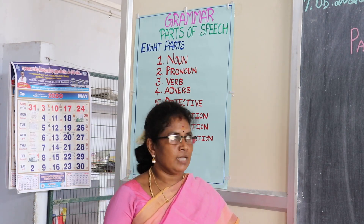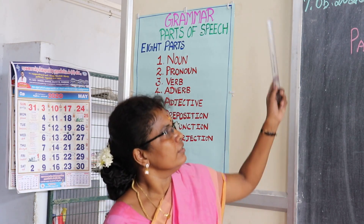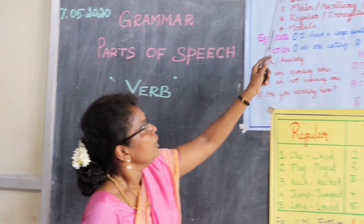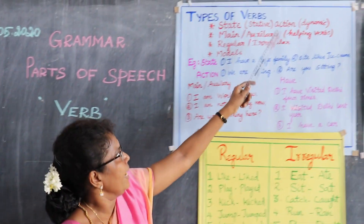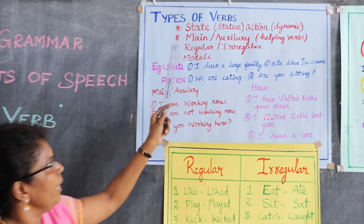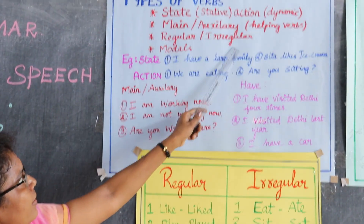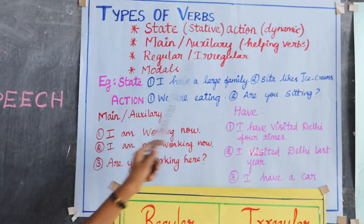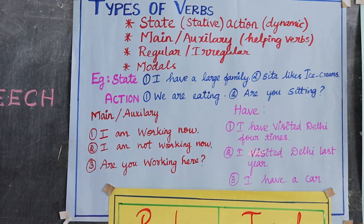We start with types of verbs: state and action, main and auxiliary, regular and irregular, and modals.